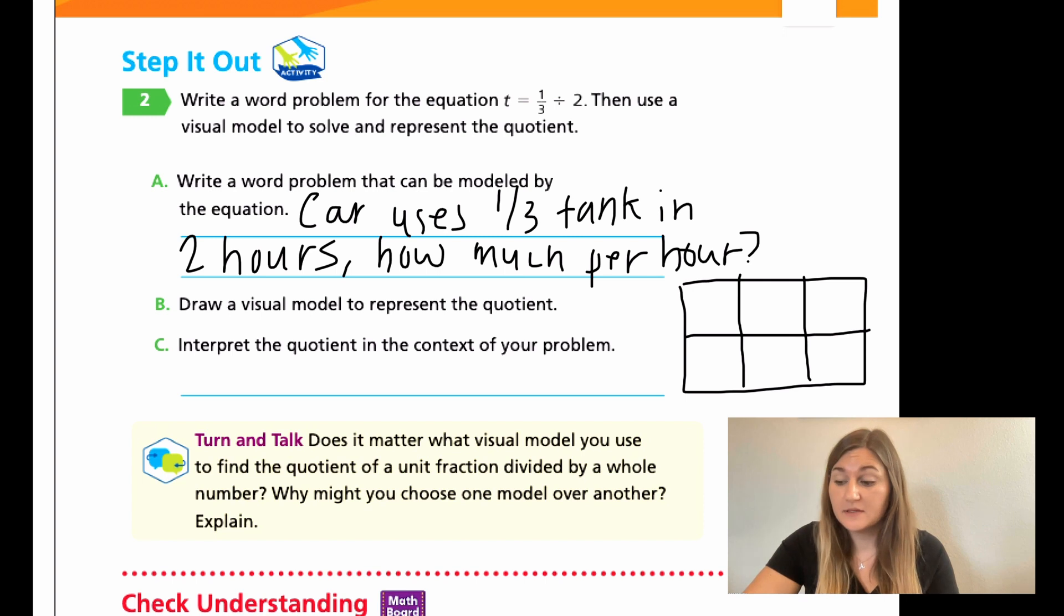But for C, it might be a little bit different. Interpret the quotient in the context of your problem. So, I know that it would be one-sixth of a tank. For me, I use the tank of gas. So, you should have one-sixth of whatever you decided your word problem was going to be about. But mine is one-sixth of a tank of gas per hour. And that per hour really does matter in this problem.